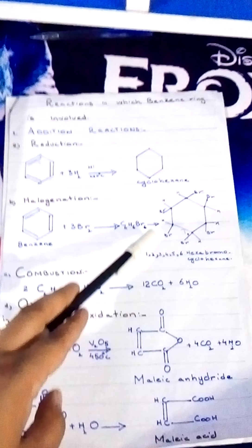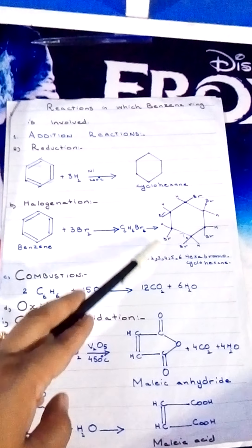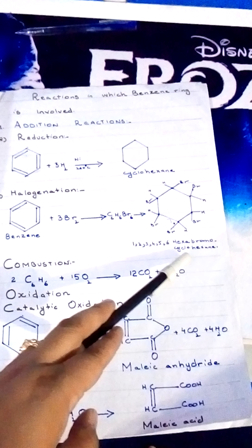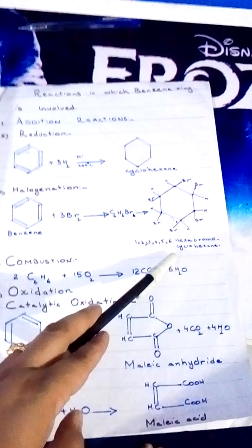Benzene reacts with bromine. Each carbon atom, 6 carbon atoms, 6 bromine atoms are attached. This is the structure of 1, 2, 3, 4, 5, 6 hexabromocyclohexane.